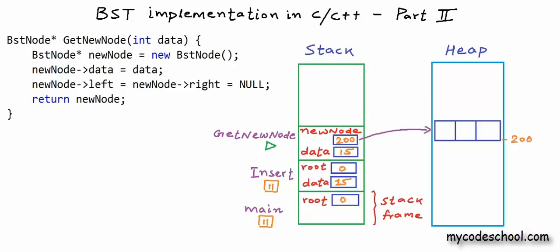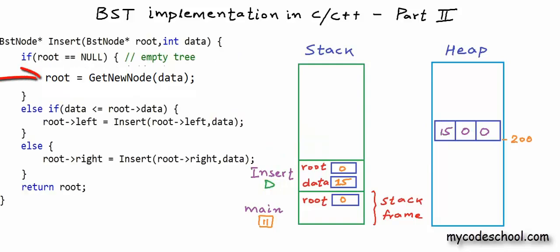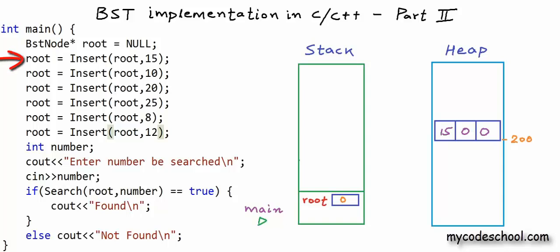In get_new_node we use the new operator to create a BST node in heap. Say we get a new node at address 200 — this address is stored in new_node. We set the data field to 15, left child to null, and right child to null. Get_new_node returns address 200 and finishes; its stack frame is reclaimed. Insert resumes and sets its local root to 200. Insert then returns 200 and finishes. Main resumes and root in main is set to 200.